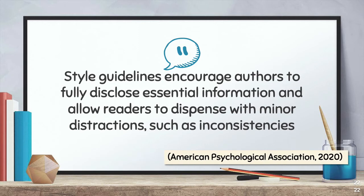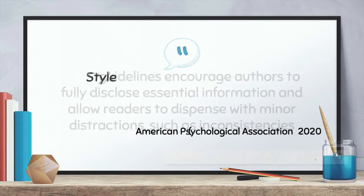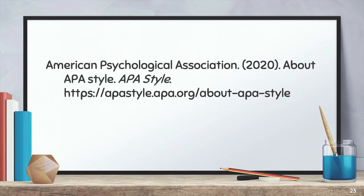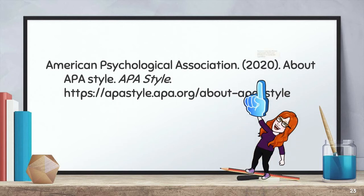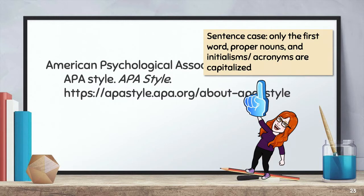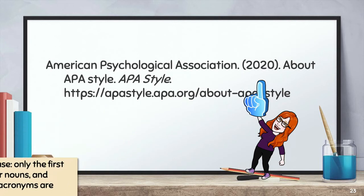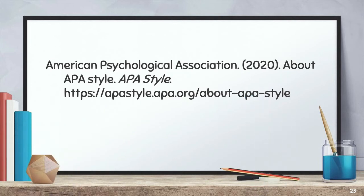This parenthetical in-text citation shows that this quote came from the American Psychological Association website. This is what it would look like in my references list. The author is the organization American Psychological Association. The title of the source is written in sentence case. Sentence case means that the only words that are capitalized are the first word of the title, any proper nouns like people's names, and initialisms or acronyms. The name of the webpage is APA Style, so it is italicized. The URL is included. Note that the webpage address does not end with punctuation.